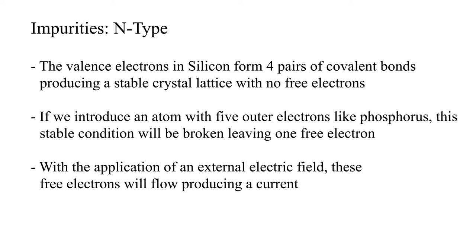However, if we introduce an atom with five outer electrons, for example phosphorus, this stable condition will be broken. After each of the silicon atom's four outer electrons combines with the outer electrons of phosphorus, there will be one electron left and it will turn into a free electron.